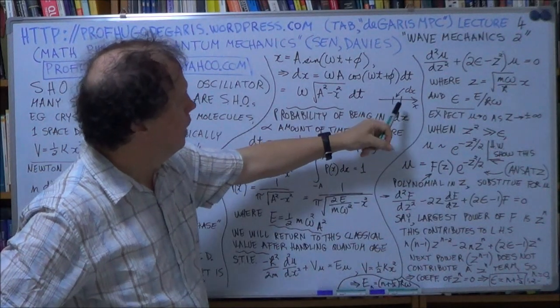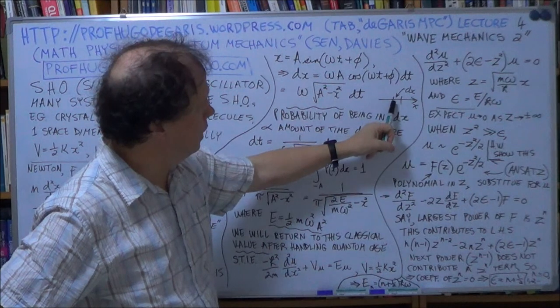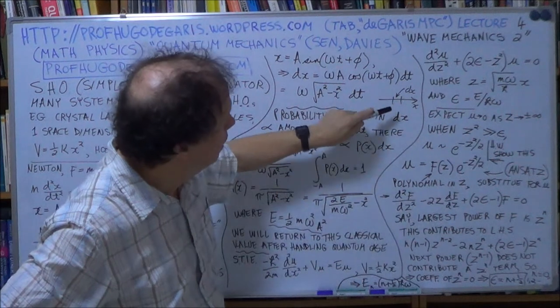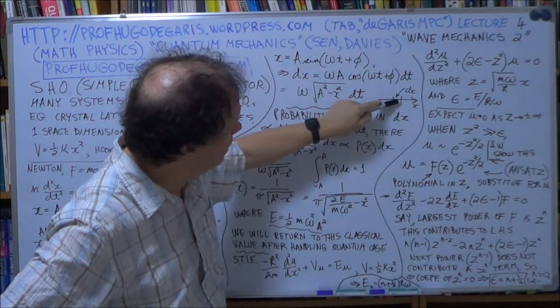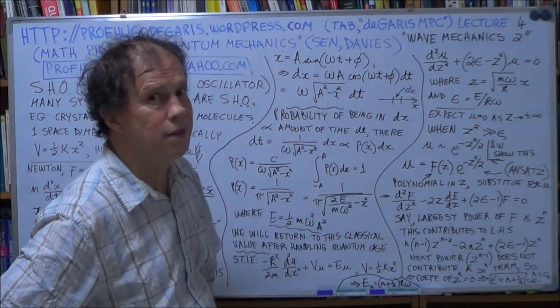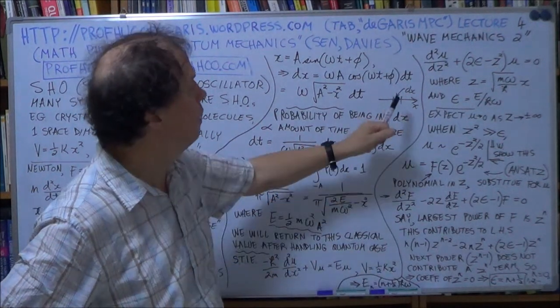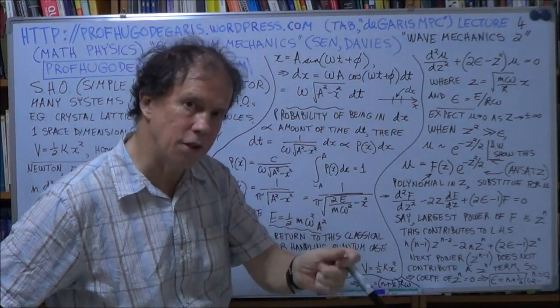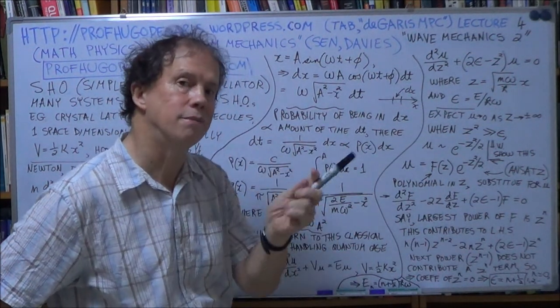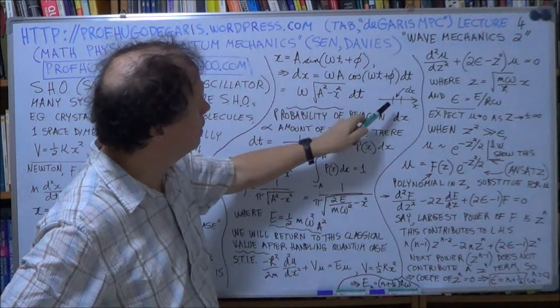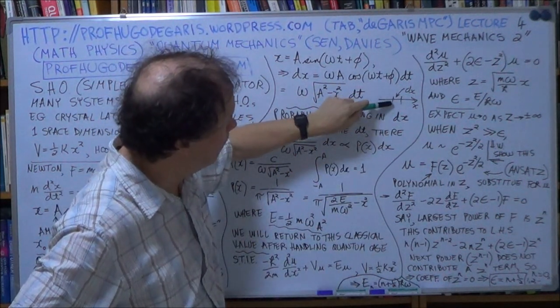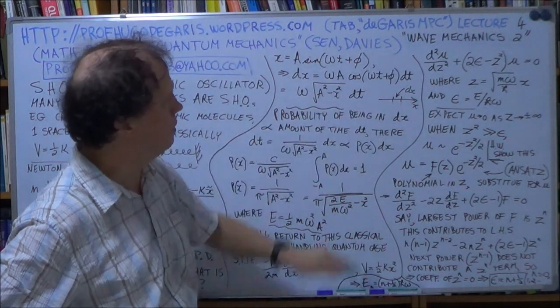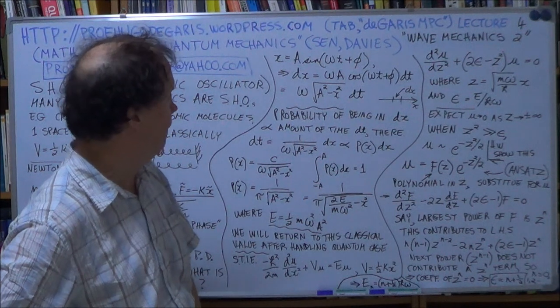The particle in that little space, delta dx, will be proportional to how much time the particle spends in that space. If it's spending more time there in that space, the probability of finding it there at the instant that you look at it goes up. So the probability is proportional to the amount of time that it's in that delta x, that little bit of space, delta x.